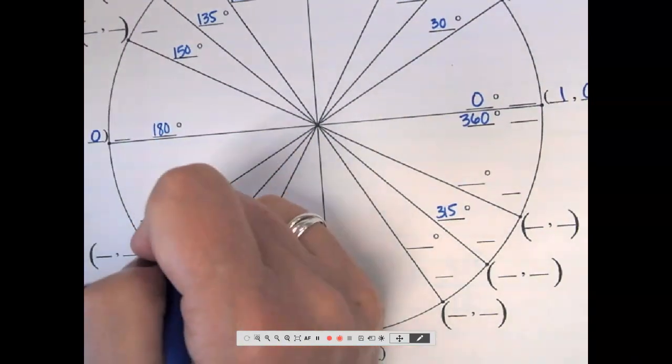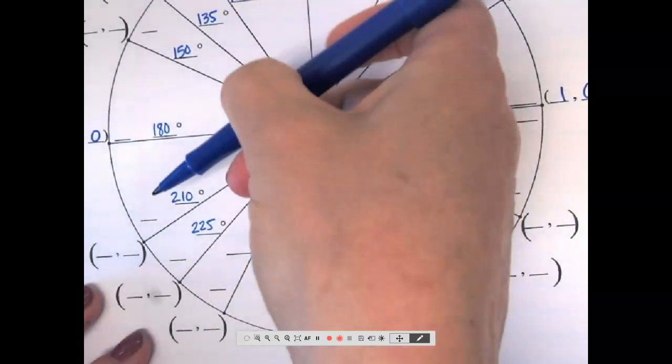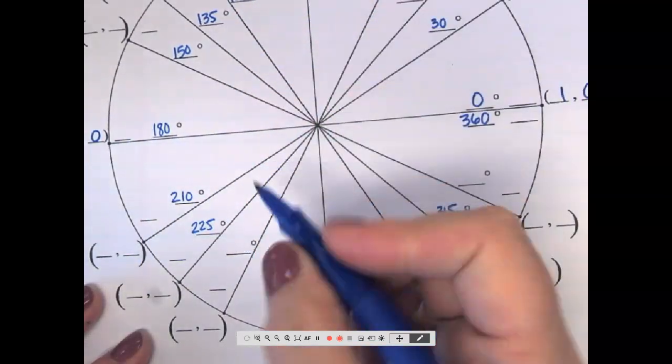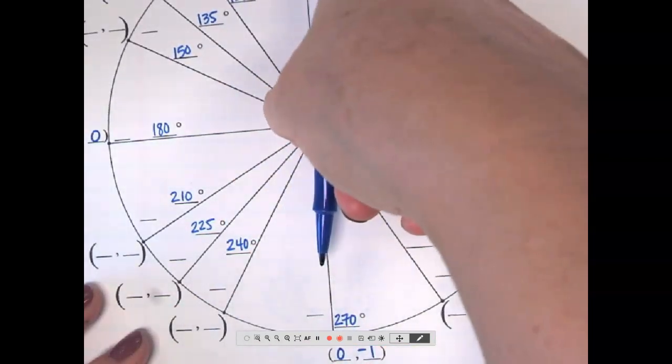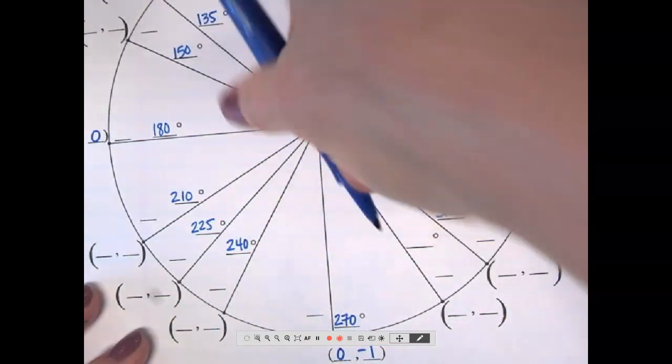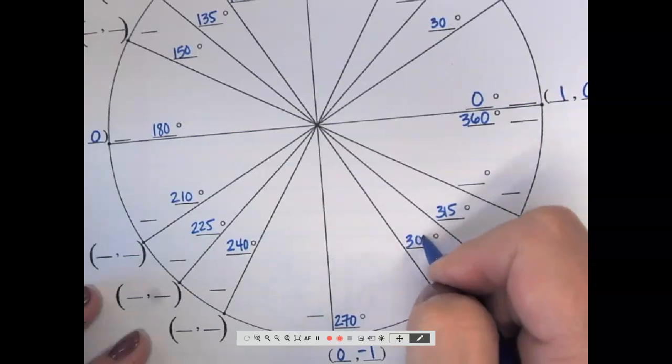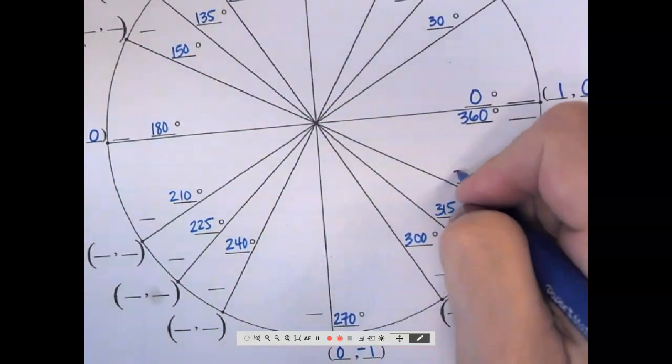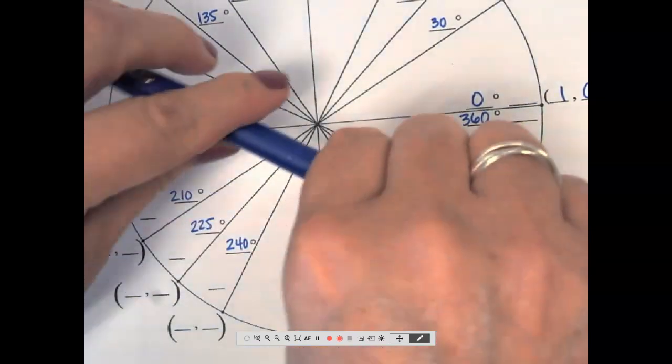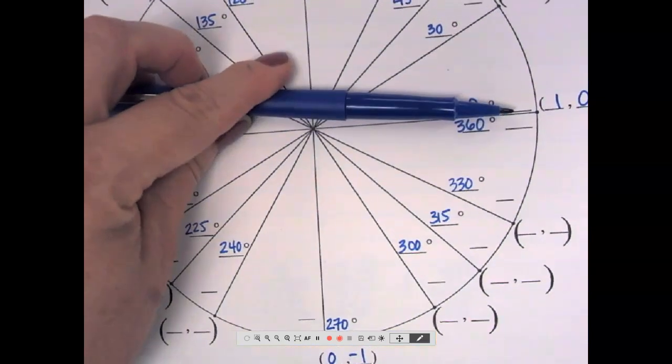Plus 30 is 210, plus 30 more is 240, plus 30 more is 270, plus 30 is 300, plus 30 is 330, and then plus 30 more puts us back at 360.